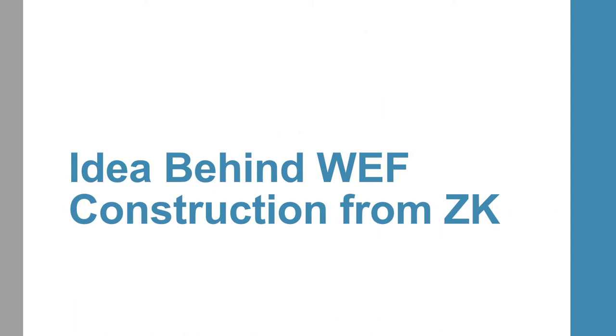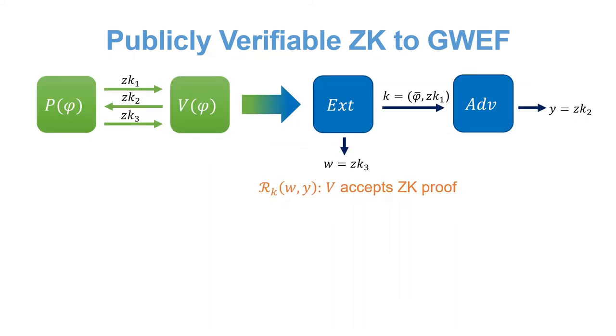Let's move on to the WEF construction from zero knowledge. And again, let me begin by providing some intuition. Given a three-message zero-knowledge protocol for some language L, we will now construct our general WEF. Each valid key is consisted of a no statement for the language L, and the first message in the zero-knowledge protocol. A hard instance, or the image if you'd like, will be the verifier's response in the protocol. A corresponding witness will be the last prover message that makes the verifier accept.